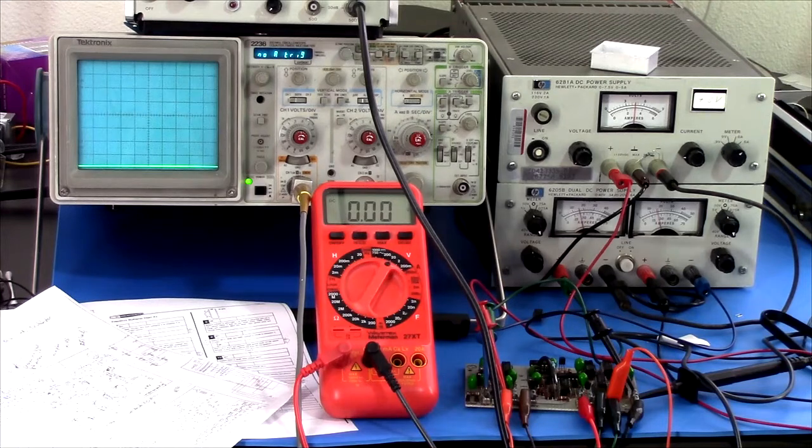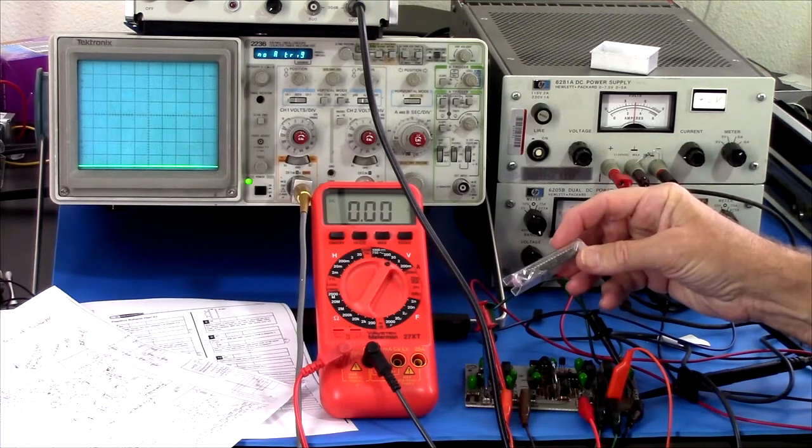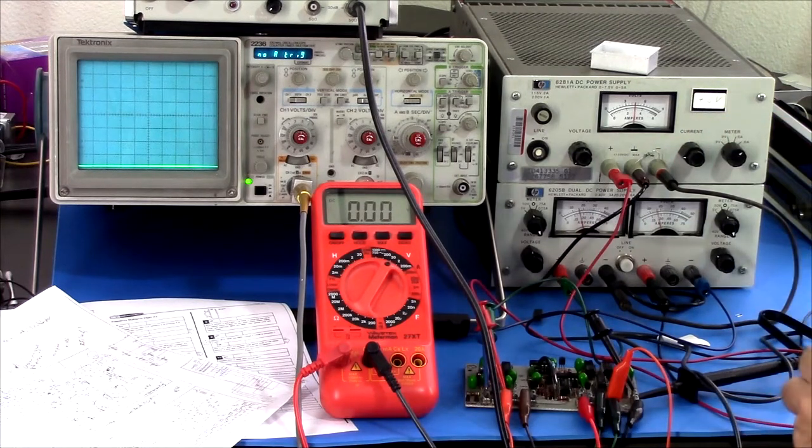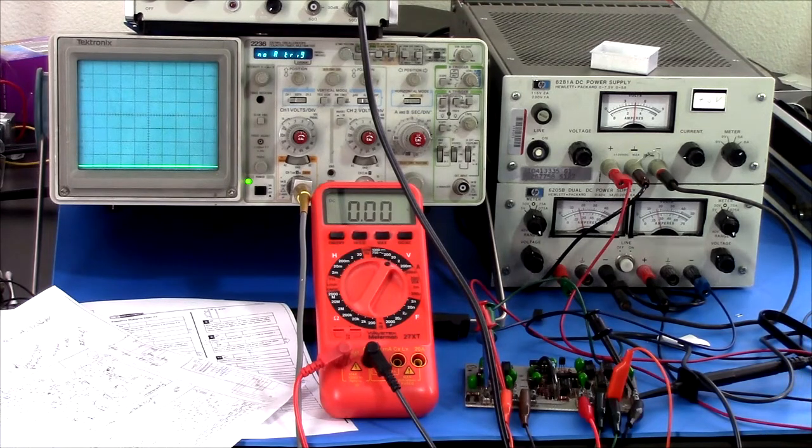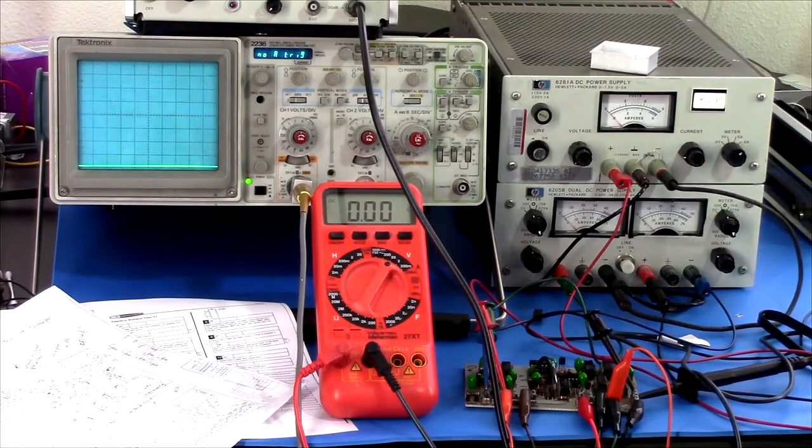That is IC509, NMC1023P. Where in the world am I going to find one of those? Those things are super obsolete ECL gates - you can't get them at Mouser or DigiKey. Oh wait, here's three of them here, so we'll try one of those.